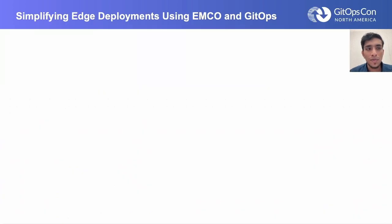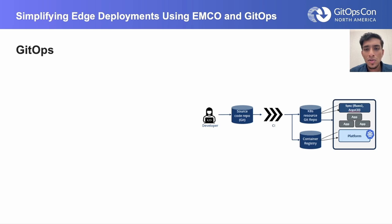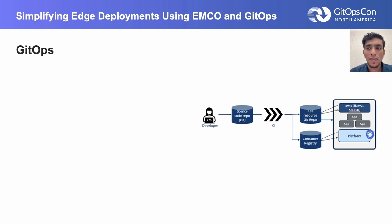Before we jump into our problem statement, we would like to recap what GitOps is. This is a basic GitOps flow. We have the developer on the left hand side who puts in the source code — resource YAMLs, etc. — and through some CI, it goes to the desired state resource Git repo. And on the cluster, we have config agents like Flux or Argo, which continuously monitor this Git repo for resources or any changes.